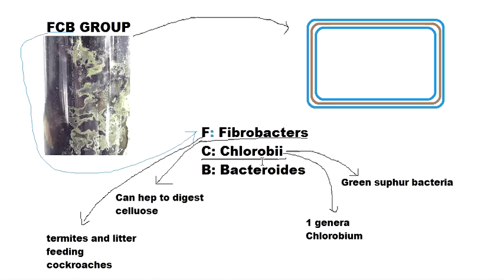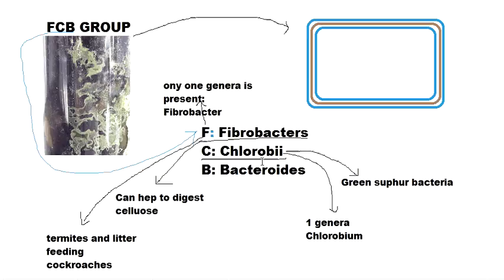Fibrobacter lives in endosymbiosis with its host. Notably, Fibrobacter is a phylum that contains only one genus — Fibrobacter itself — with species such as Fibrobacter succinogenes. It has only one order, one class, one family, and one genus, making it a very small phylum.